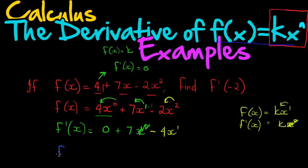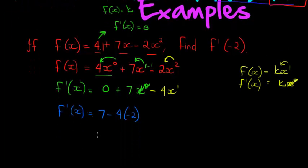So what is the derivative in the point negative 2? That would be 7 minus 4 times negative 2 gives me plus 8. So 7 plus 8 gives me 15.